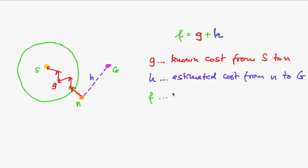And we know that f is the sum of g plus h. But what does it mean? Well, f is the minimum cost of a path from start to go, which goes through n.